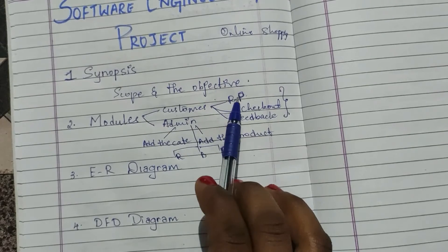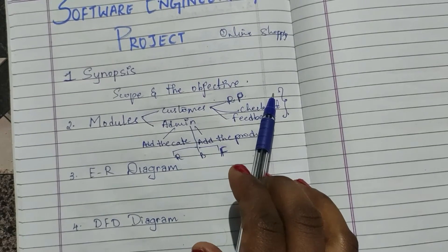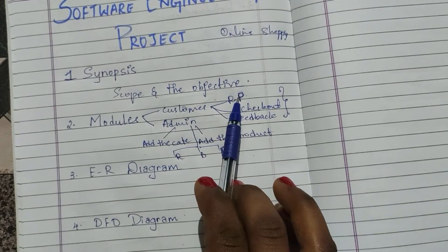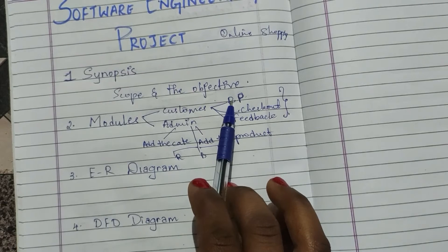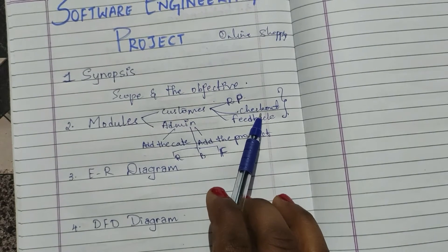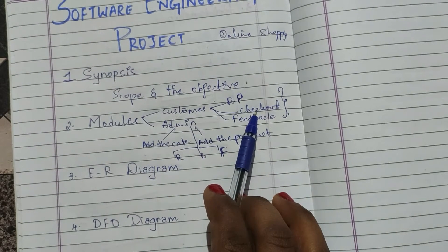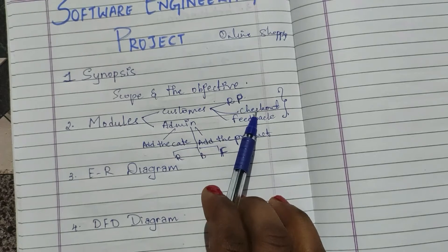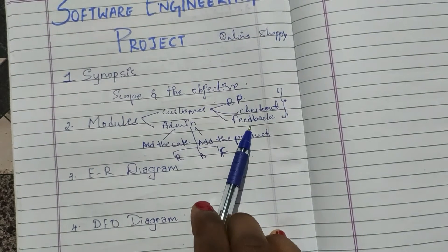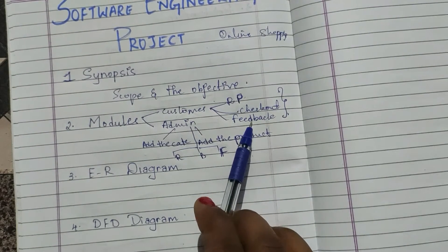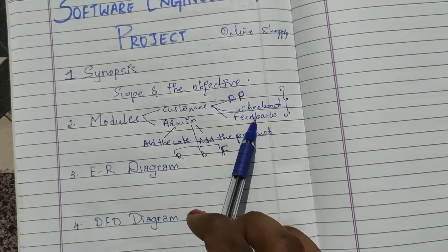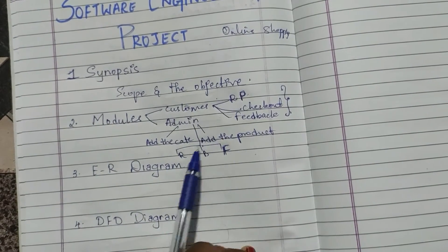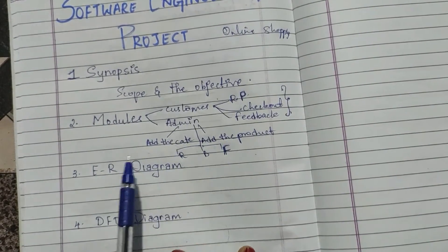For each module you just give a one-line description. For example: the registration module helps the customer to register by providing their details. The checkout page module helps for confirmation of the product placed by the customer. The feedback page gives the opinion of the users. Do the same for the admin side modules.